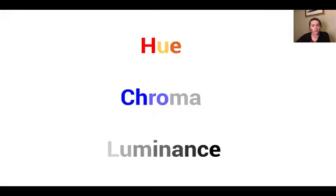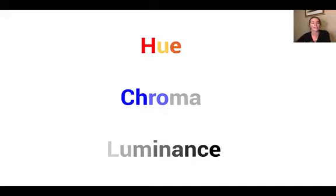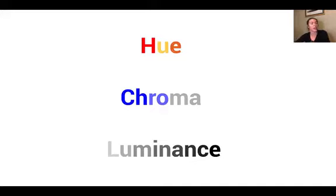All of this is grounded in three core perceptual properties of color. The hue, or what particular name our color is — is it red, yellow, orange? Think about this as the color wheel that many of us learned about in class growing up. We also have saturation or chroma — is our color bright and saturated or dull and muted? And finally we have luminance: how light or dark is a particular color?